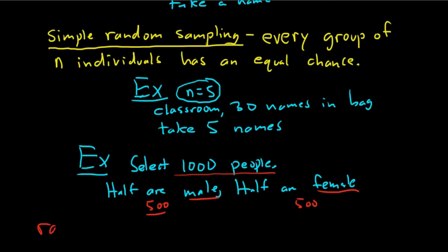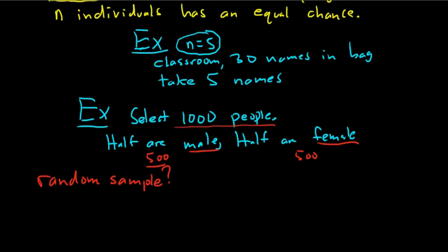So is this a random sample? Does every single individual person in the world have an opportunity here? The answer is yes. Because no matter what, you're going to be male or female, and we're always picking half male and half female — so every individual has an equal opportunity to be selected. Yes, this is a random sample.